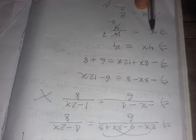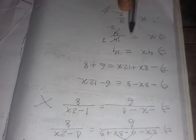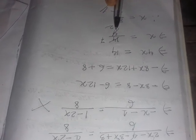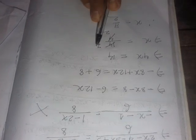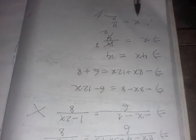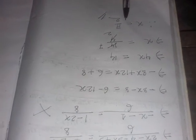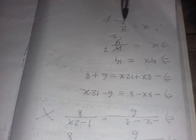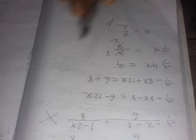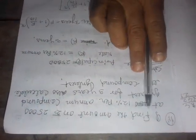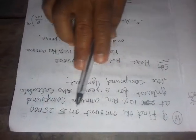So x equals 14 by 4. Simplifying: 2 times 2 is 4, and 2 times 7 is 14. Therefore x equals 7 by 2. This is the first solution. Now the second question.